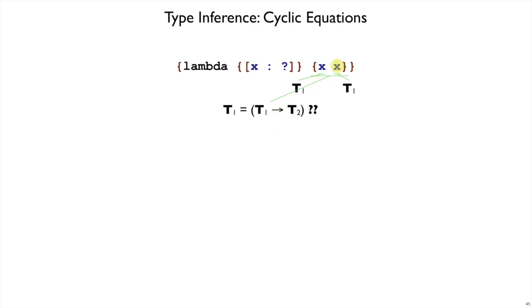Meanwhile, the argument type is taken from the argument expression, so we put a t1 there. Now we have something that doesn't look like a good definition. This is saying that t1 has to be the same thing as an arrow that has t1 on the left. And if we try to simplify this a little bit, we can say, well, t1, I know what that is.